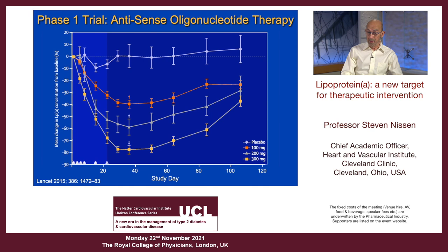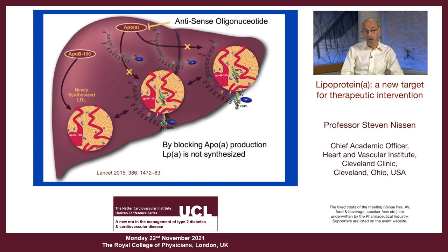In order to do this, you've got to get the drug into the liver, because that's the target organ. You can give a lot of antisense oligonucleotide and some of it will get into the hepatocytes. When you give a lot of it frequently enough, you block the ApoA production in the hepatocyte in the liver.